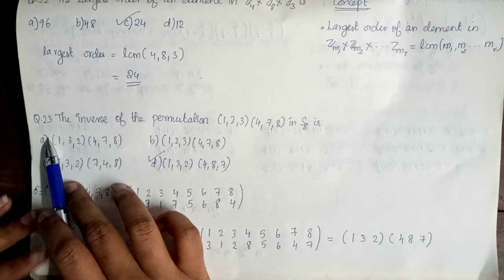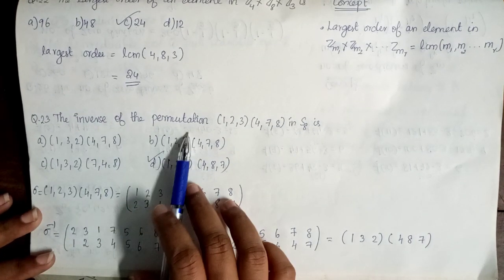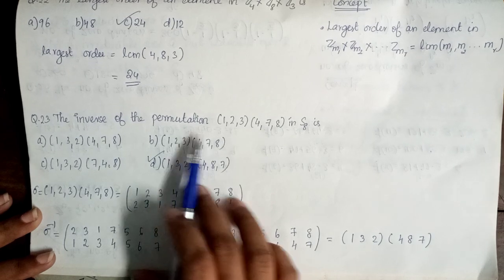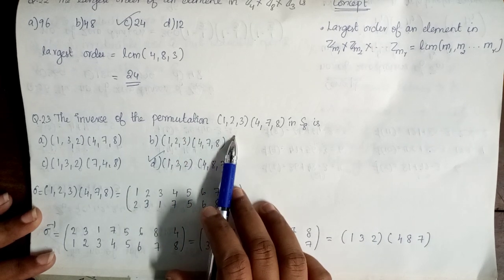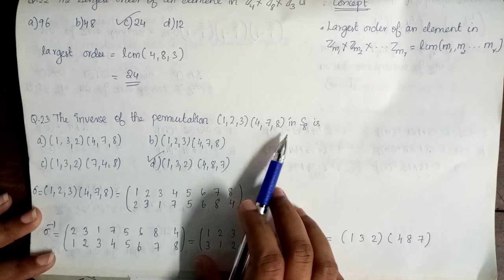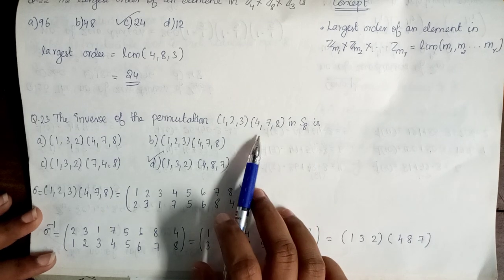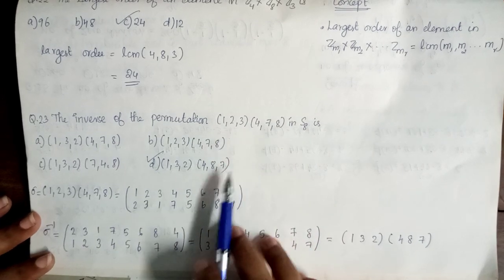Next question, 23. The inverse of the permutation mapping 1, 2, 3, 4, 7, 8 in S8. We need to find this permutation's inverse.